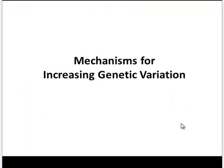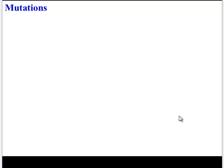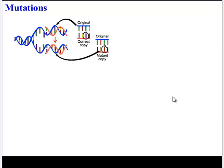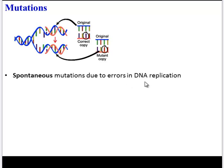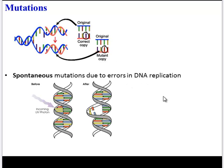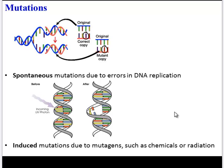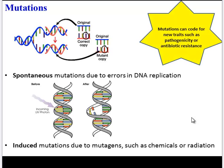So if bacteria reproduce asexually, why aren't they all identical? Well, bacteria have some pretty interesting mechanisms to increase genetic variation, and it's these mechanisms that have allowed them to become antibiotic resistant. The first mechanism is also found in eukaryotes — mutations. Most mutations in bacteria are spontaneous due to errors in DNA replication, but some can be induced by the environment, such as chemicals, radiation, or other mutagens. Keep in mind these mutations could be neutral, harmful, or helpful by providing antibiotic resistance.